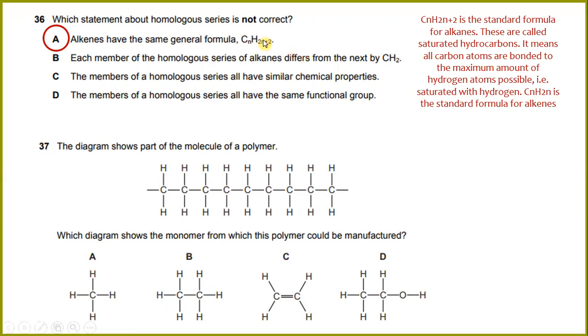The diagram shows part of a molecule of a polymer. Which diagram shows the monomer from which this polymer could be manufactured? So the answer will be C.